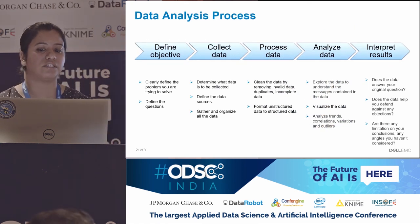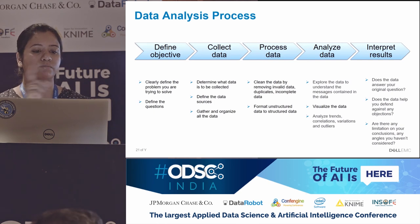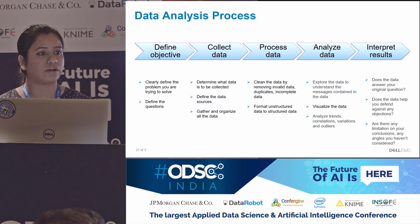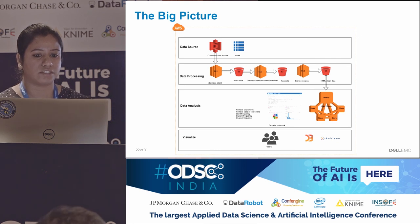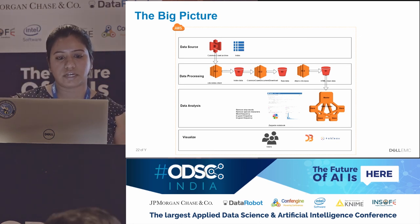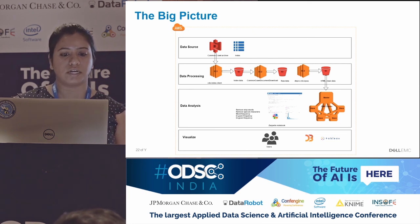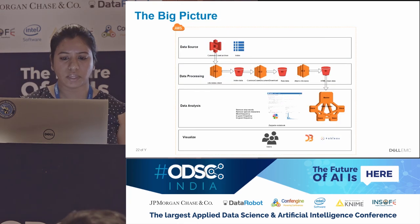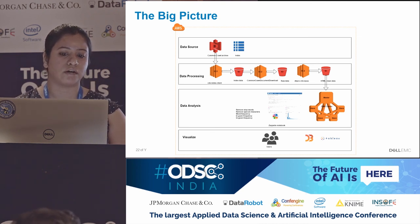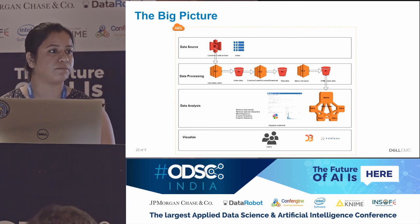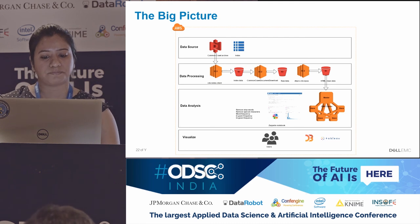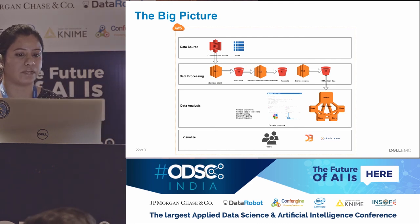The last step is interpretation of results, where you circle back to your first step and see if you were able to find answers for the questions you started off with and whether you were able to solve the business problems you were looking for. This is a high-level architecture of the project we did in AWS. The four layers are data source, data processing, analysis, and visualization. Data source is the public dataset in the S3 bucket — we downloaded the indexes, stored them in S3, used the Common Crawl project to download raw web page data, used the DKPro C4 Corpus project to get rid of HTML tags, then fed the HTML-cleaned data to Zeppelin notebooks on EMR clusters for analysis, and finally the data was visualized in D3JS. We have not been using Tableau yet, but it is on our roadmap.